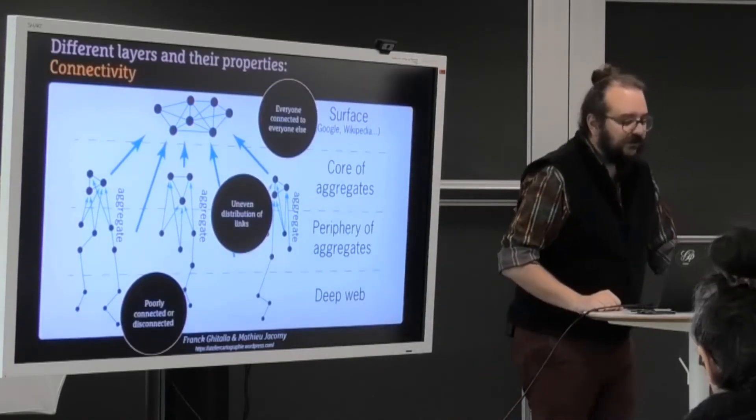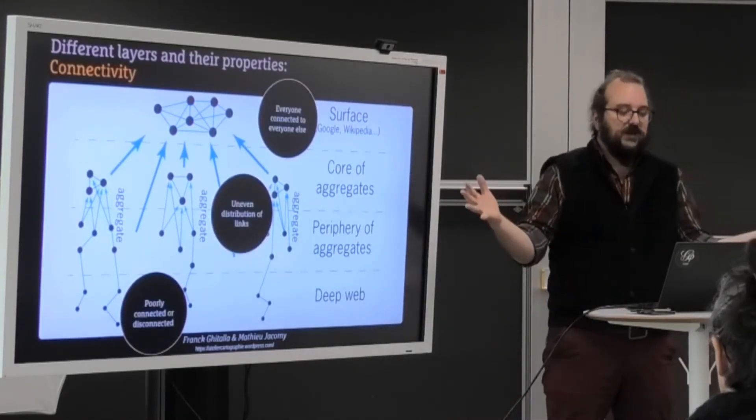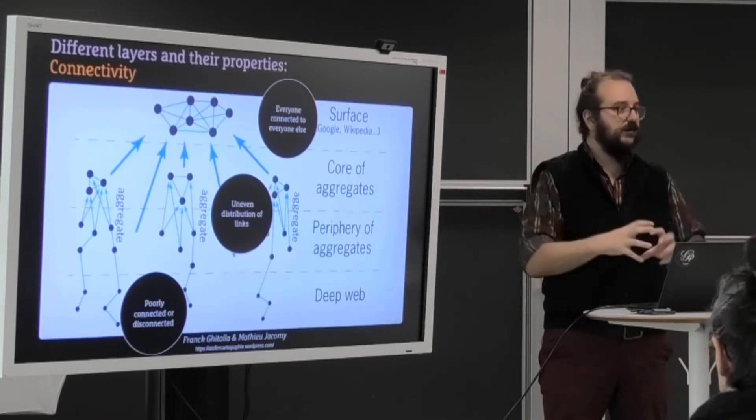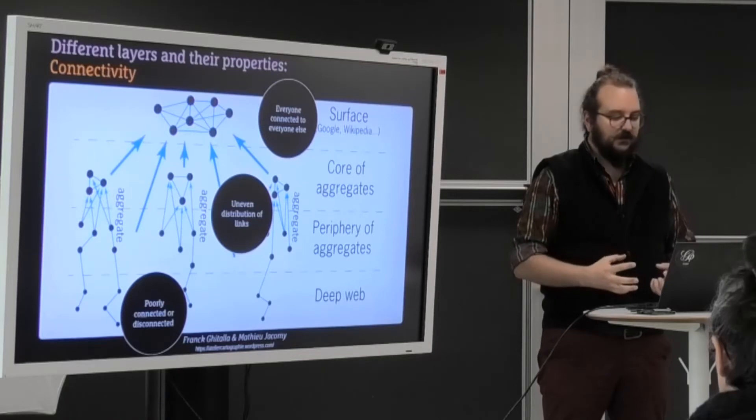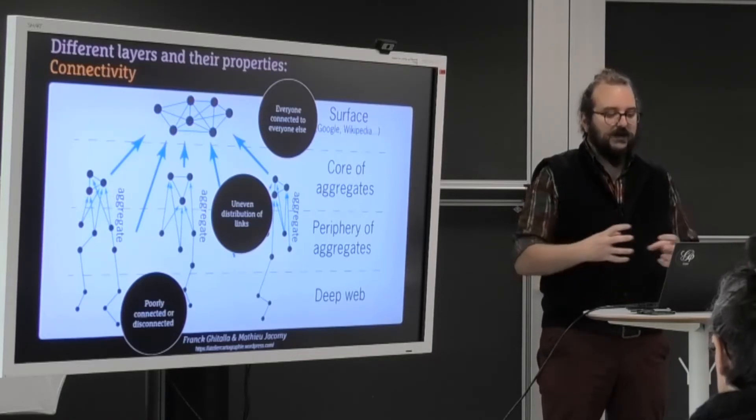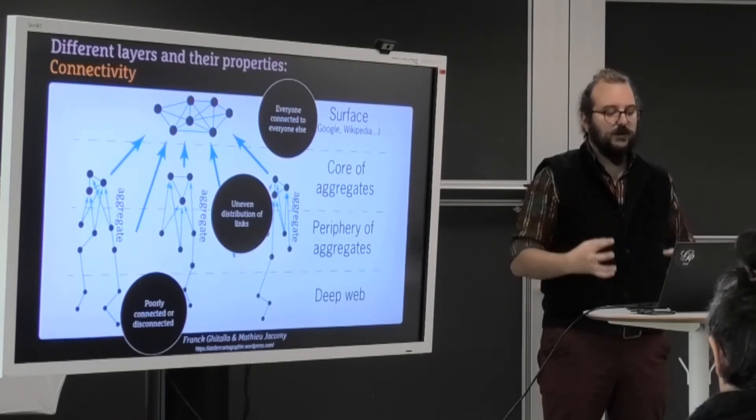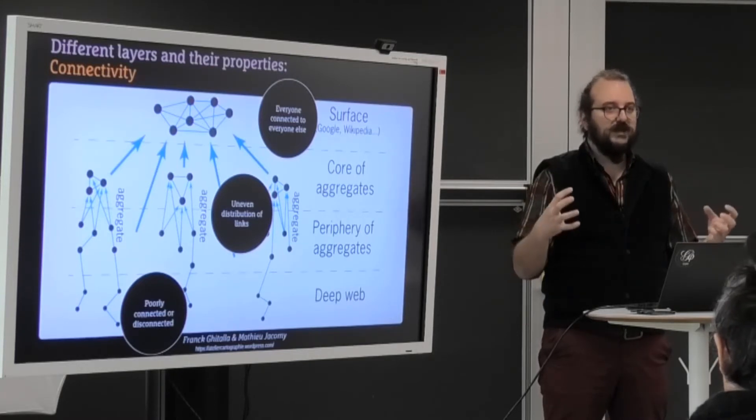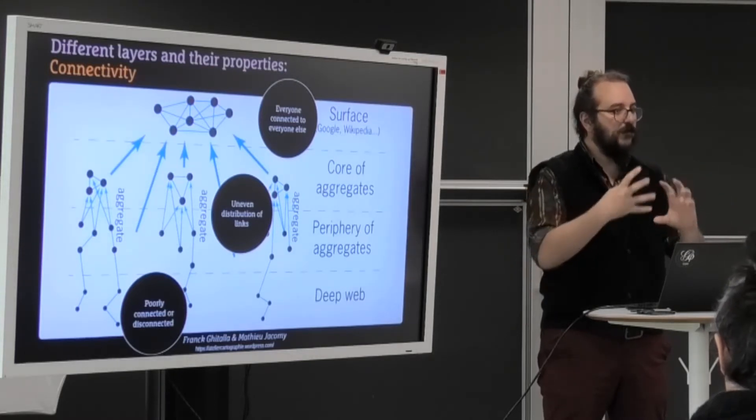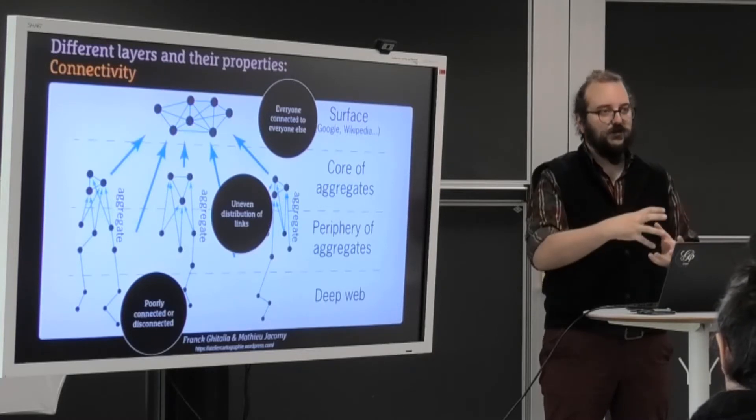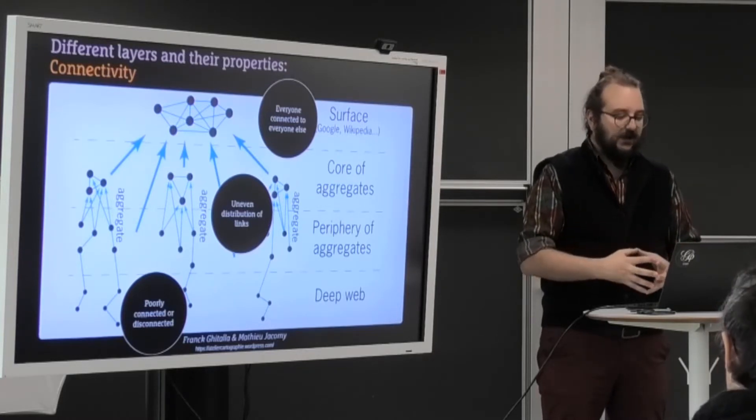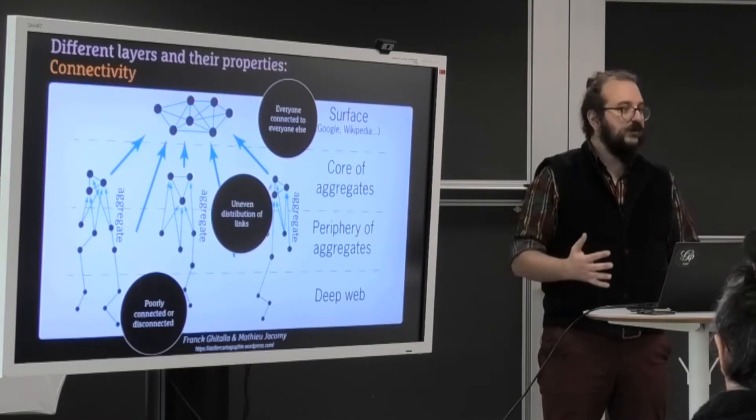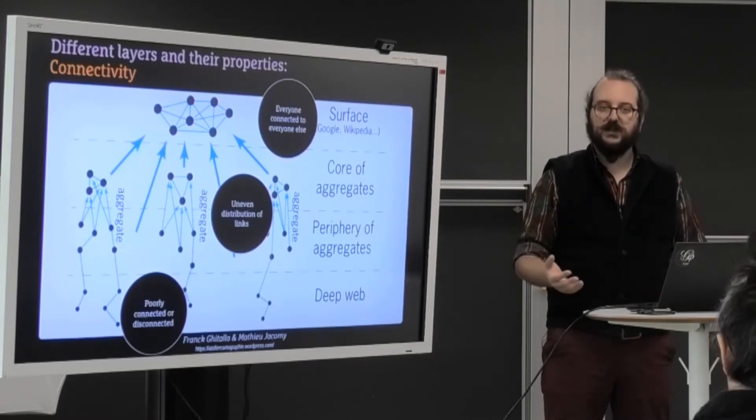So if we look at the connectivity, the surface is super-cited by everyone and everyone is connected to everyone in the surface. Now in the aggregates is where not everyone is connected to everyone. It's where assertivity, homophily happens. It's where you link more to the ones who are like you. And the deep web is where the links are poorly connected, sometimes completely disconnected.